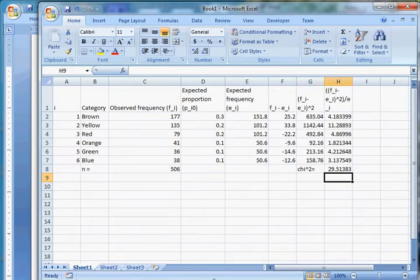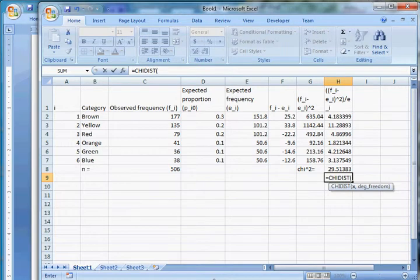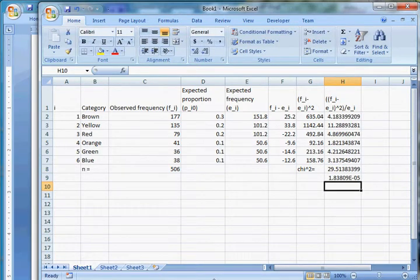So if we want to know what that is, we can do equal chi dist, and then we put in this, which is our test statistic, and we have 5 degrees of freedom. And that's 1.838 times 10 to the negative 5th, which is 0.00001838.